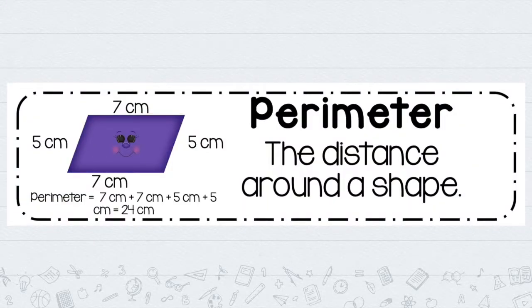So the first word we are going to review is the word perimeter. Perimeter is the distance around a shape. When you're thinking about perimeter, you are thinking about the outside of a shape, the measurements outside of the shape. So if I take a look at the example right here, we have a quadrilateral — a shape with four different sides — and we have the measurements for each one of those sides.